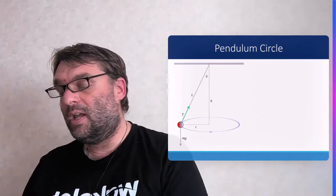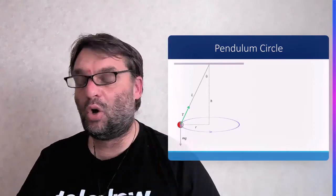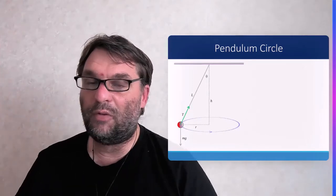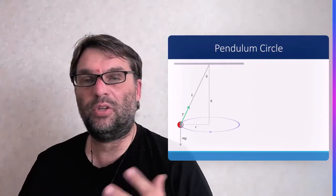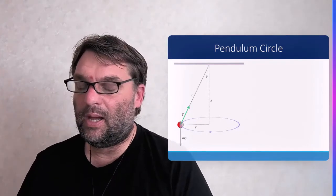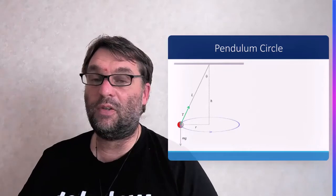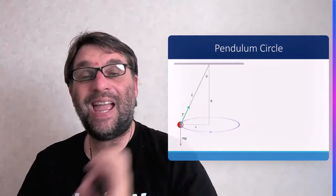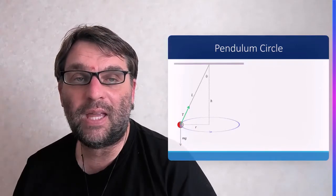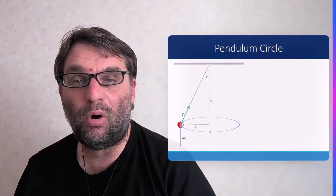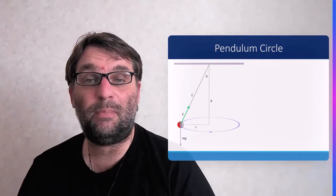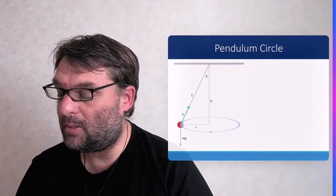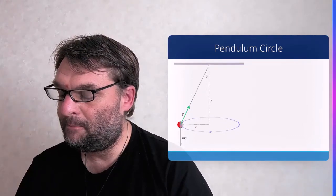This shows that the velocity at which a conical pendulum moves around its circular path depends on the radius of that path and the angle of the string, but is actually independent of the mass of the bob. We will look later at the time period of pendulums.